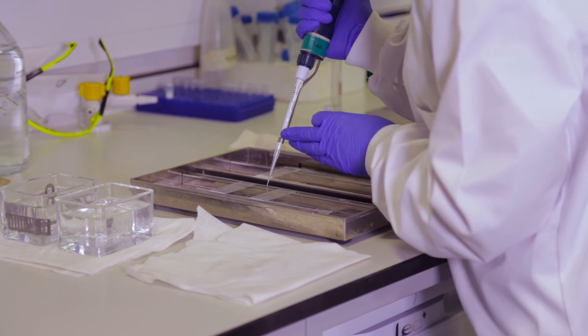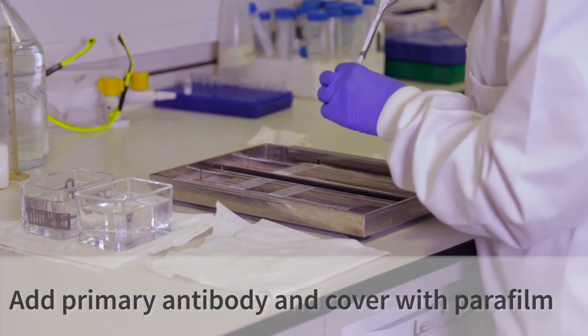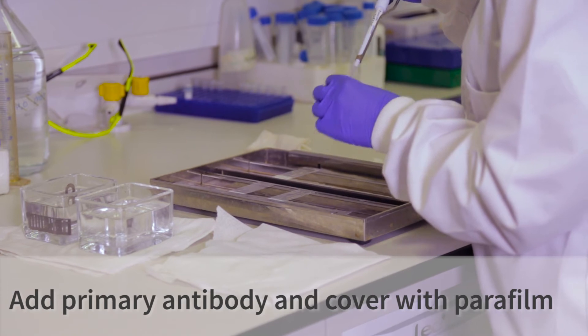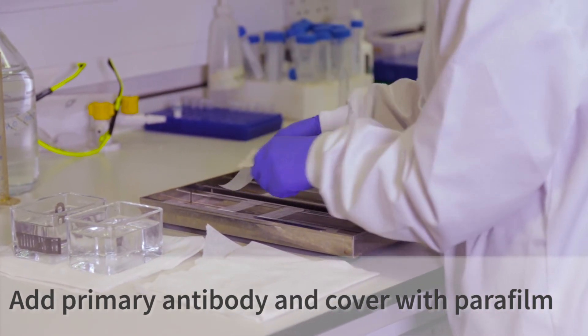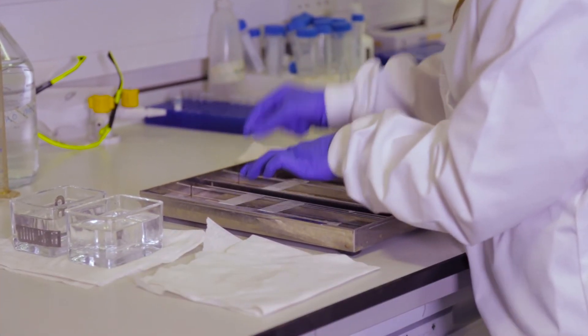Next, pipette on your primary antibody solution. This is made up by adding your primary antibody to the blocking solution from previous. Then, cover the slides in parafilm and leave overnight.